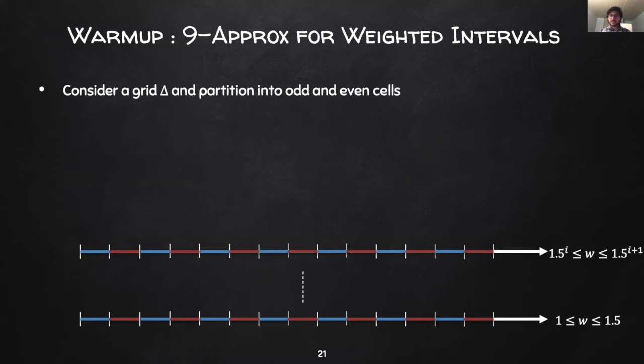We again consider a grid of side length 1 over the real line and shift it randomly. We then partition the grid into odd and even cells. Recall, from our previous discussion, it suffices to focus on the MIS restricted to the odd cells. We now further partition each cell into poly-logarithmically many geometrically increasing weight classes. The i-th weight class captures intervals with weights in the range 1.5 to the i and 1.5 to the i plus 1.